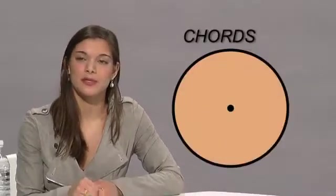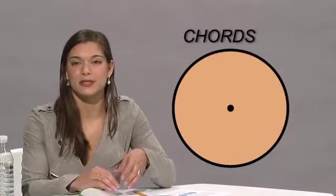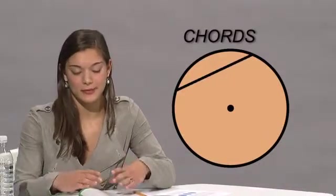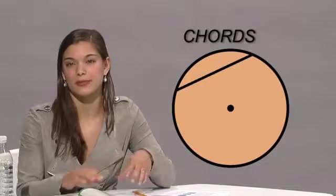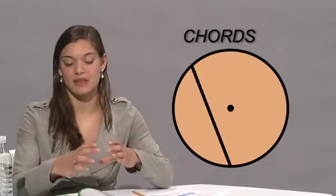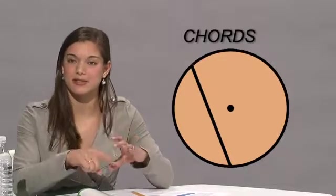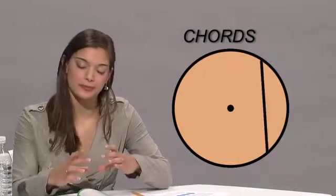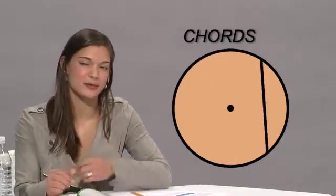One more thing is chords. So chords are just a line that pass through a circle anywhere but through the center. So they could pass in any direction as long as they touch the sides of the circumference but they don't go through the center because that would be the diameter.